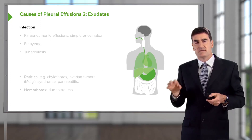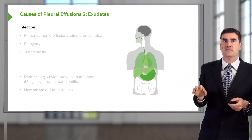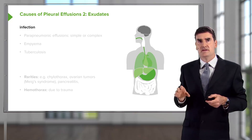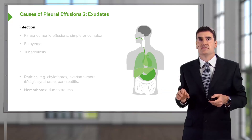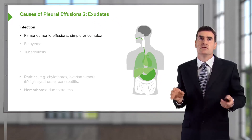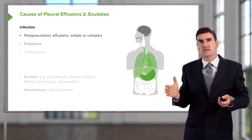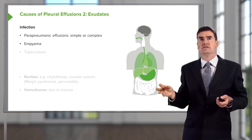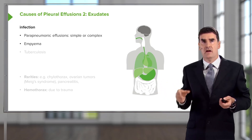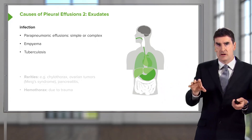The last major category of exudative pleural effusions are those due to infection — an incredibly important category. These occur in three main circumstances: first, a parapneumonic effusion, which is an effusion associated with pneumonia; second, empyema, which is a pleural infection without associated pneumonia; and third, very importantly, tuberculosis.